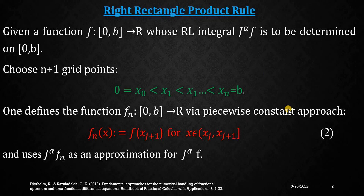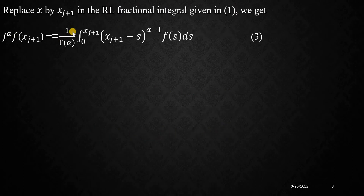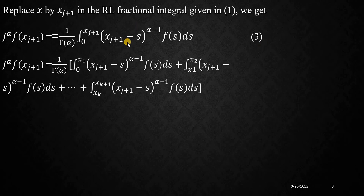You can see that the function is now approximated by f of x_{j+1}, where x_{j+1} is the right endpoint of the interval. In equation 2, we are showing that x belongs to this interval — once again, this right endpoint is considered. In the Riemann-Liouville fractional integral given in equation 1, you have to replace x by x_{j+1}, and if you do so you will get equation number 3. In equation number 3, you have the interval of integration from 0 to x_{j+1}.